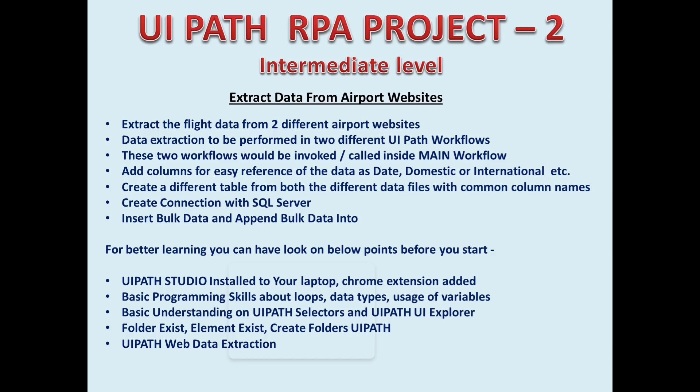The next step of this RPA project is to create a connection with SQL Server. We will cover how to create a SQL connection in UiPath, and once the connection is created, the next step is to select the common columns, create a different table, and then insert that entire data into a SQL table.